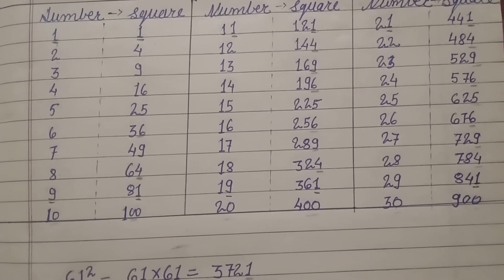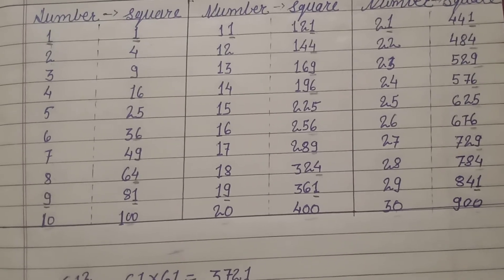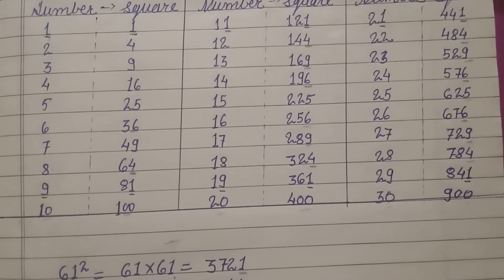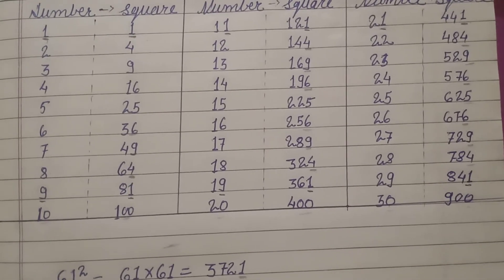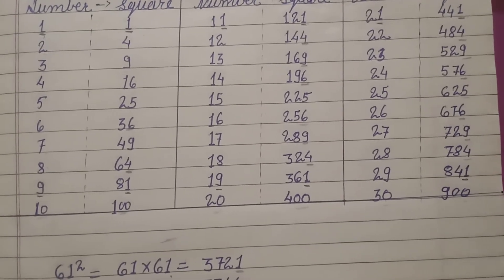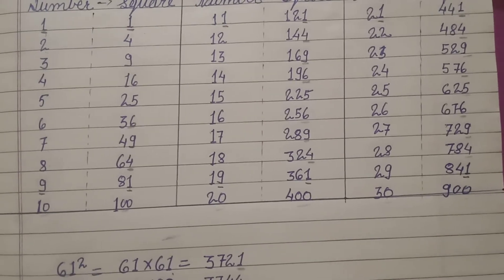Again 2 squared is 4, 4 squared is 16, 6 squared is 36, these are the even numbers and squares are also even. So we can say that square of an odd number is an odd number and square of an even number is an even number.